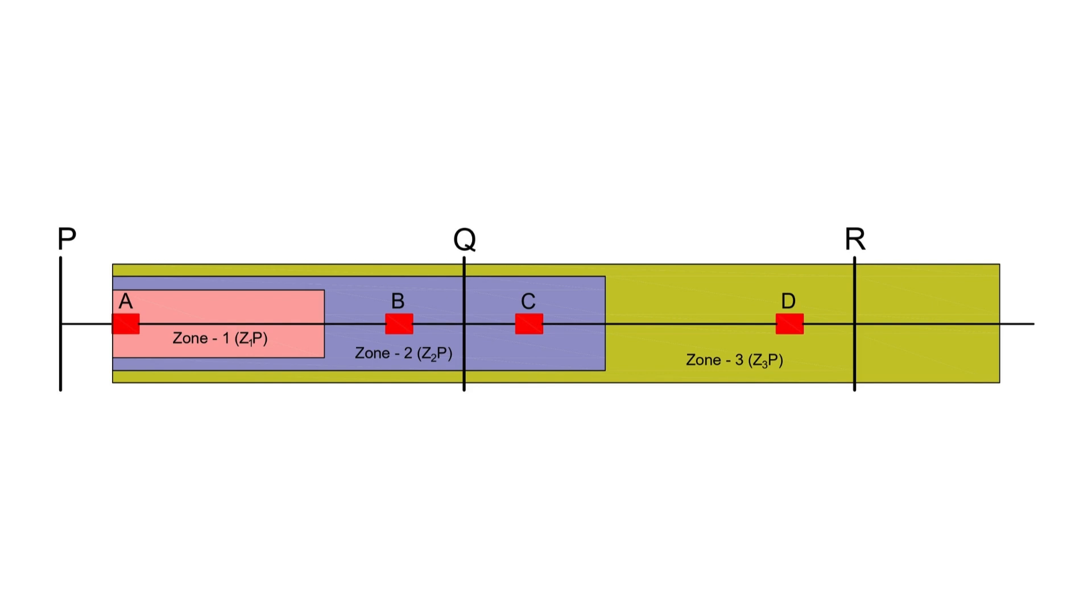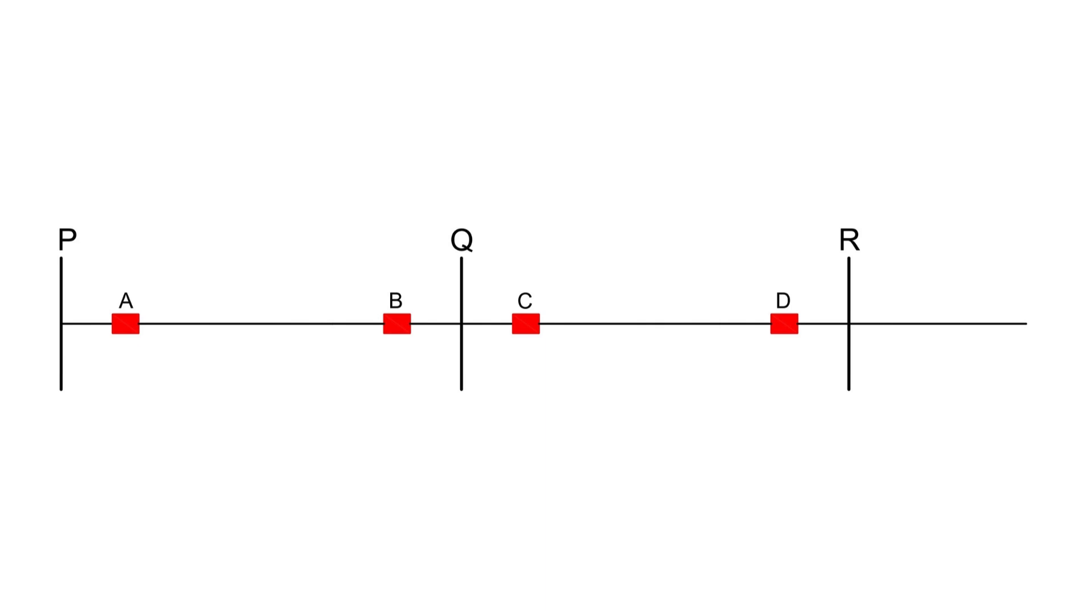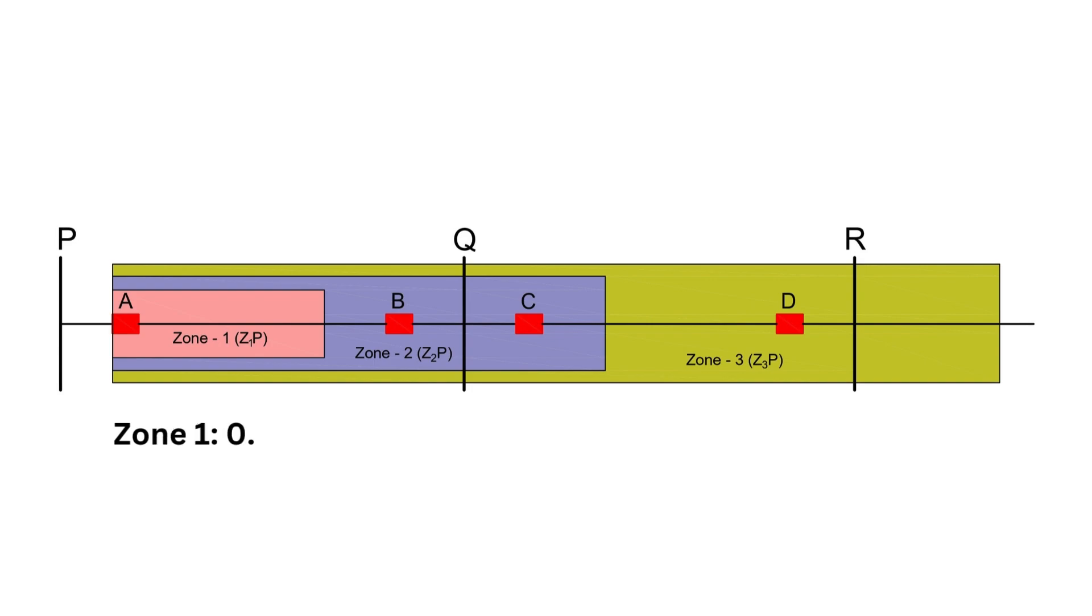Let's begin by focusing on relay A at substation P. Zone 1 is set to cover 80% of the total line length between two substations, in this case between P and Q. Zone 2 covers 120% of the protected line length, that is PQ. Zone 3 is a bit more complicated. It's set to 120% of the total length of line PQ plus the longest line connected to the next substation Q. If substation Q has two lines, QR and QS, we take QR since it's the longer line.